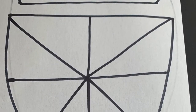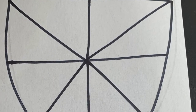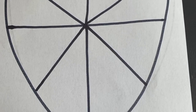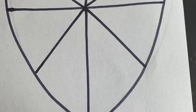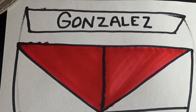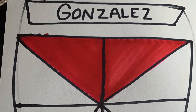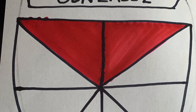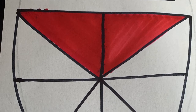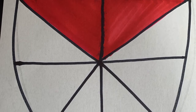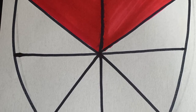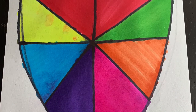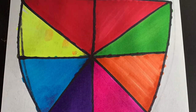I have seven people in my family, so I divided up my family crest into seven parts. Have each member of the family choose a section of the crest. For each member, choose their favorite color or a color that they like and color in that section.